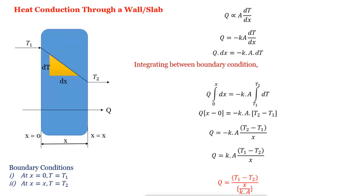Now we rearrange this equation in this manner. Q equal to T1 minus T2 upon x upon k A.